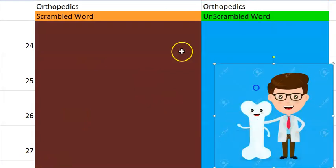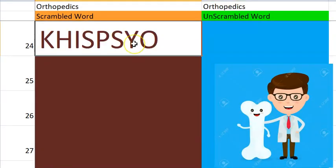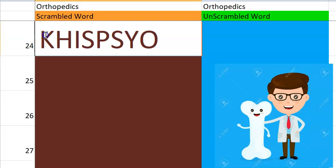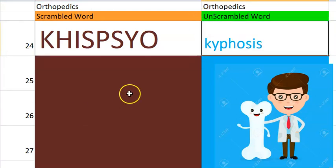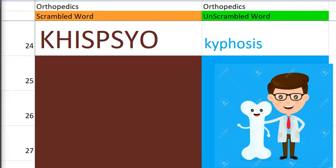Now let us go to the 24th one. What do you think the word is? Starts with a K, something to do with the spine, the bend of the spine. Kyphosis — K-Y-P-H — kyphosis. So basically it is the front to back curve of the upper spine. That is kyphosis.